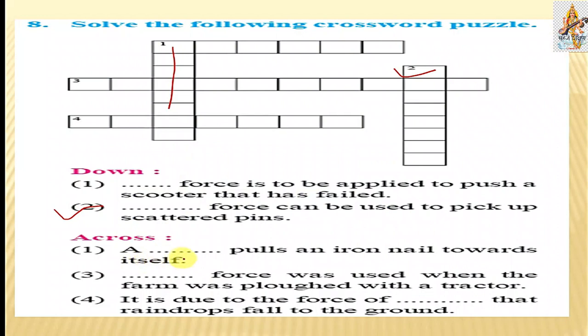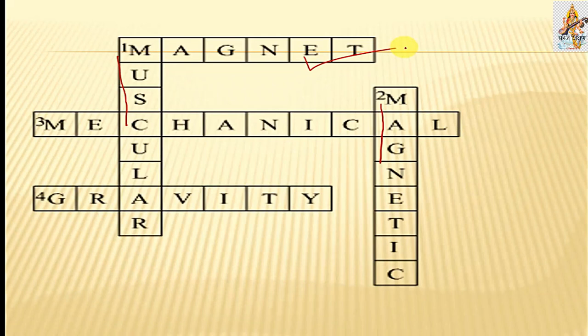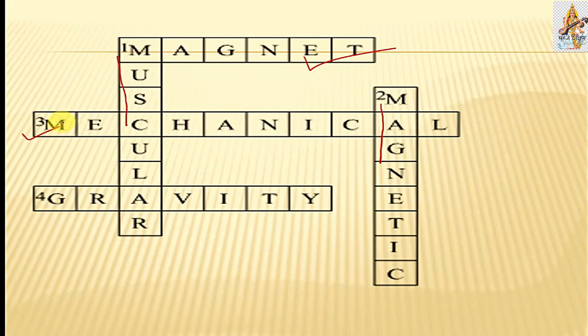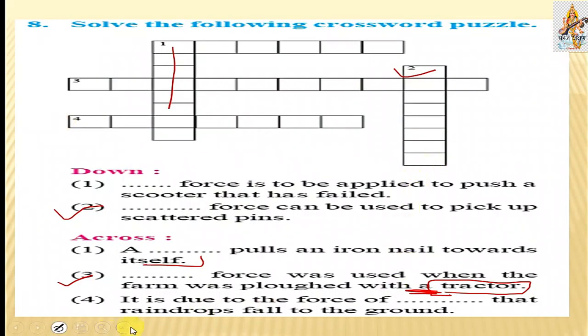Across. First, it pulls an iron end toward itself. It must be also some type of magnetic force. So it is a magnet. Third: A force was used when the farm was ploughed with a tractor. By a tractor, tractor is some type of machine. It must be some mechanical type of force. Third answer is mechanical. Fourth, it is due to the force that the raindrops fall on the ground. Due to it must be some earthly phenomenon of gravitational pull. The fourth answer will be the gravity.